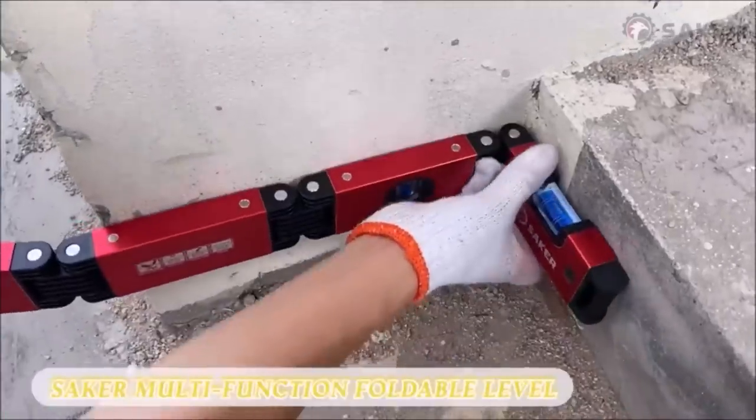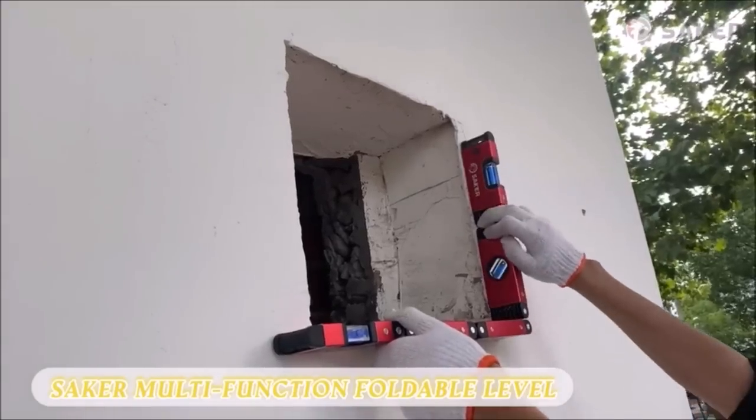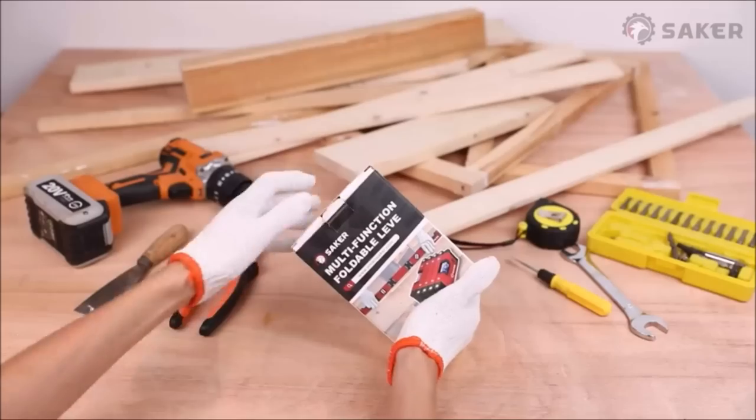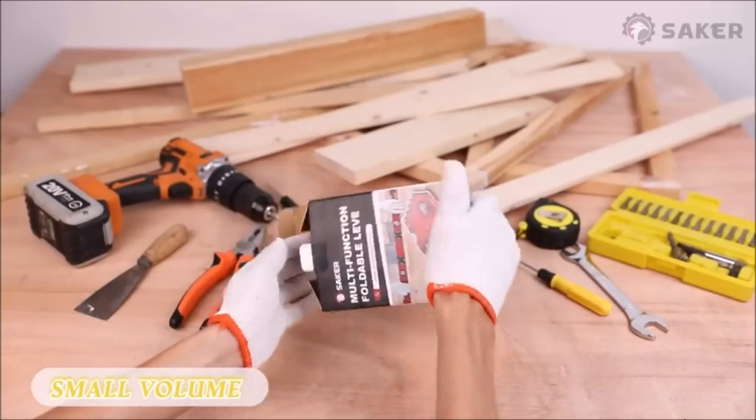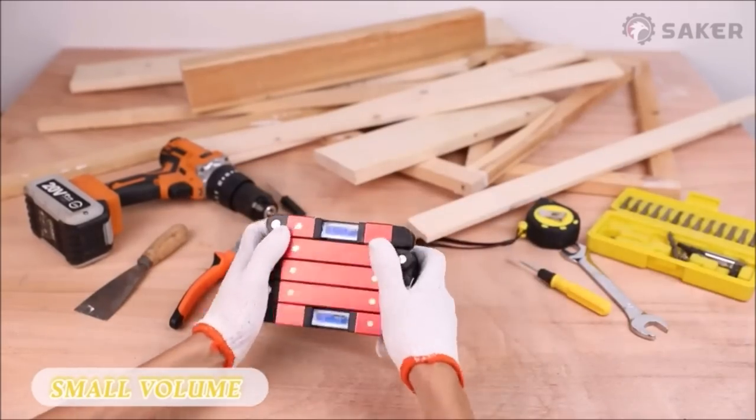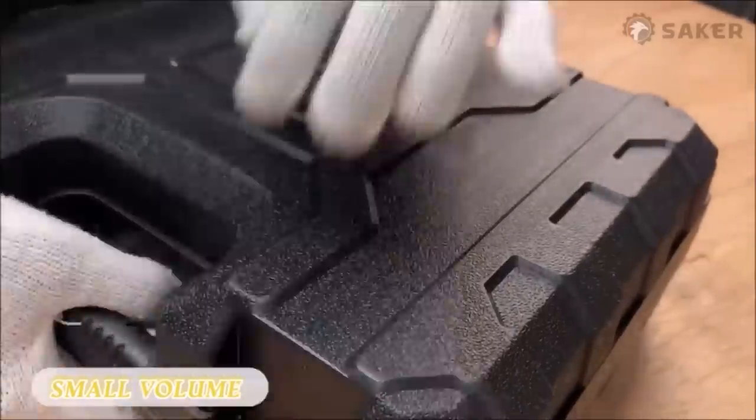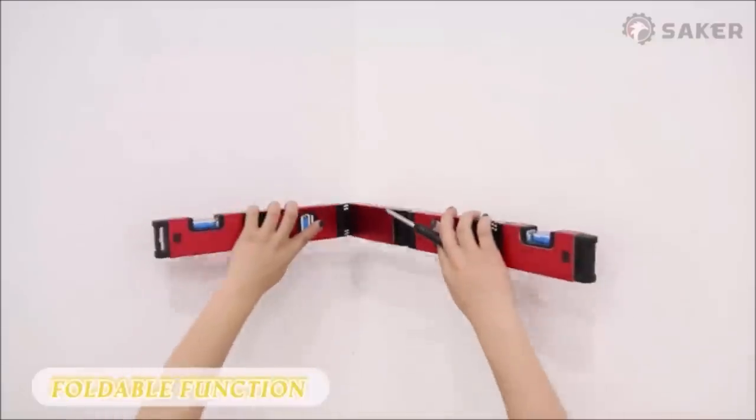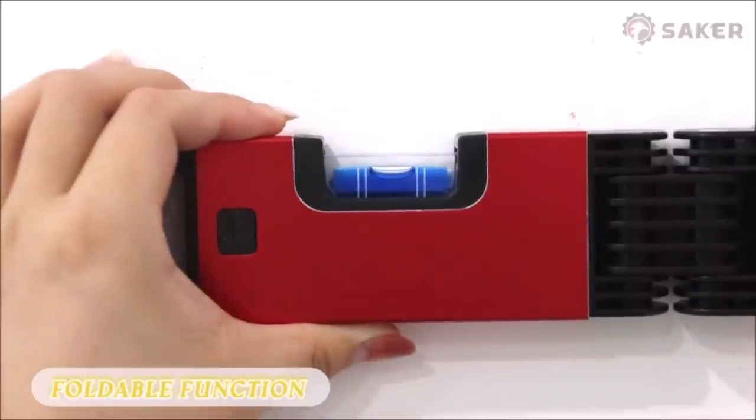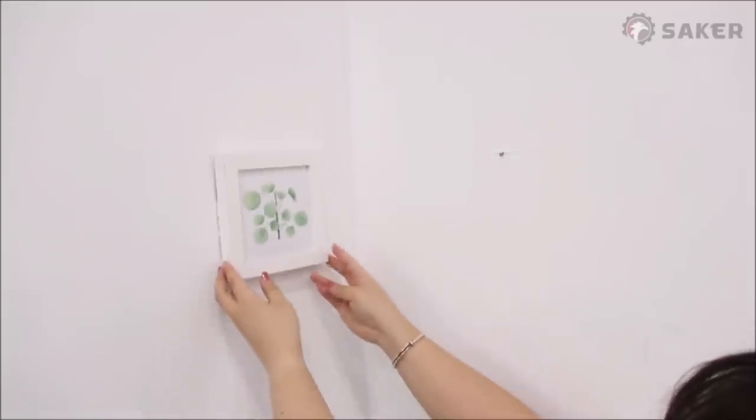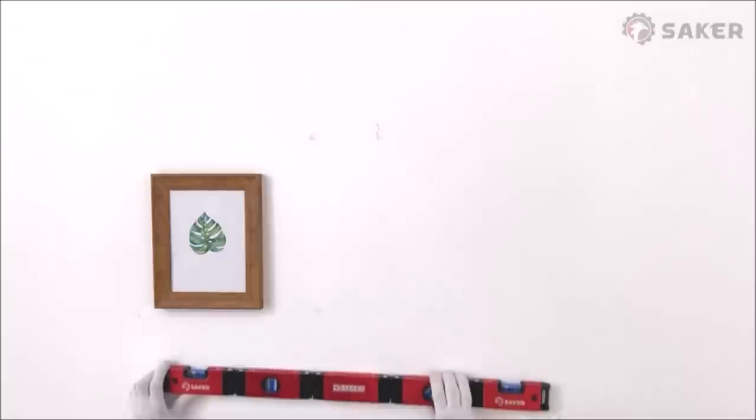Seker multifunction foldable level. Multifunction foldable level which can be folded as a rectangle shape block for daily storage and a regular straight level ruler for versatile jobs. This hinge level tool allows you to fold it to any angle to bypass obstacles and measure multiple angles simultaneously, such as for pipes, stairs, and corners.